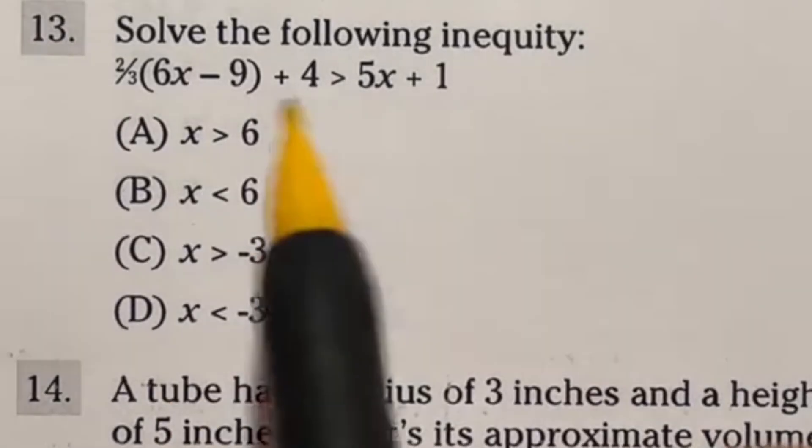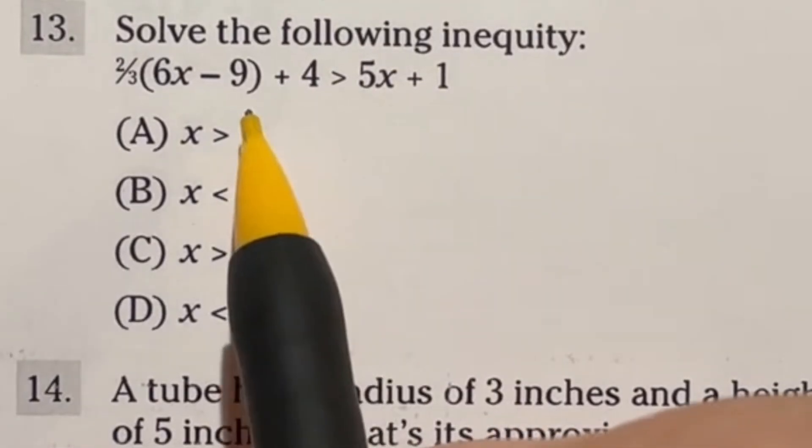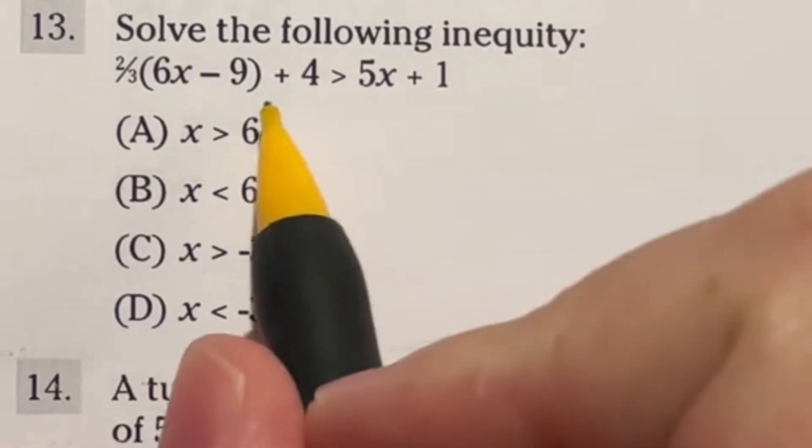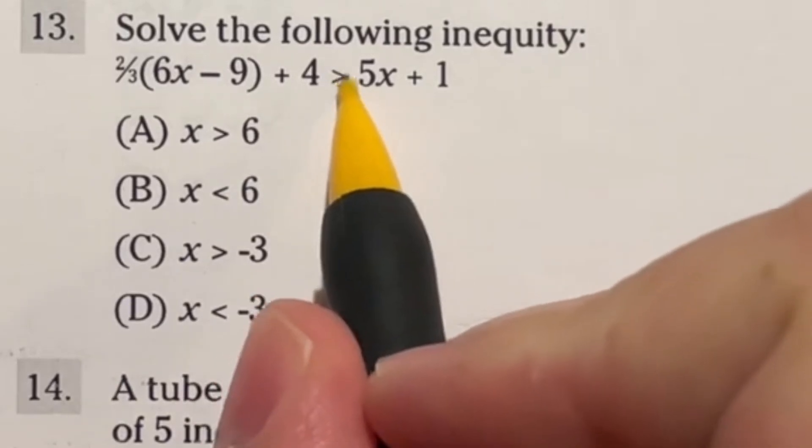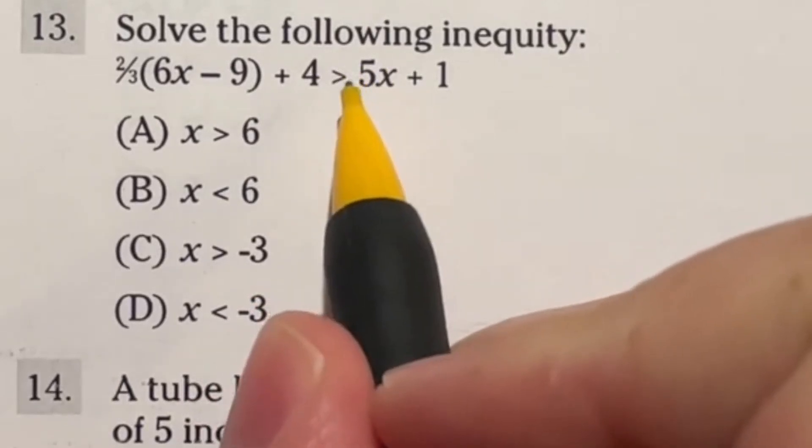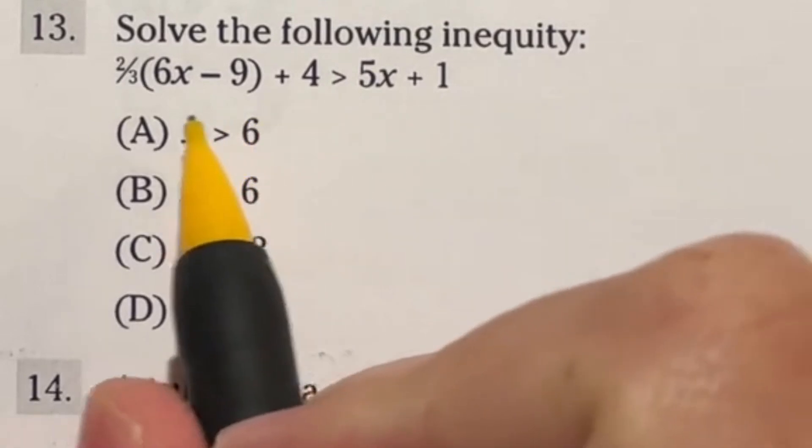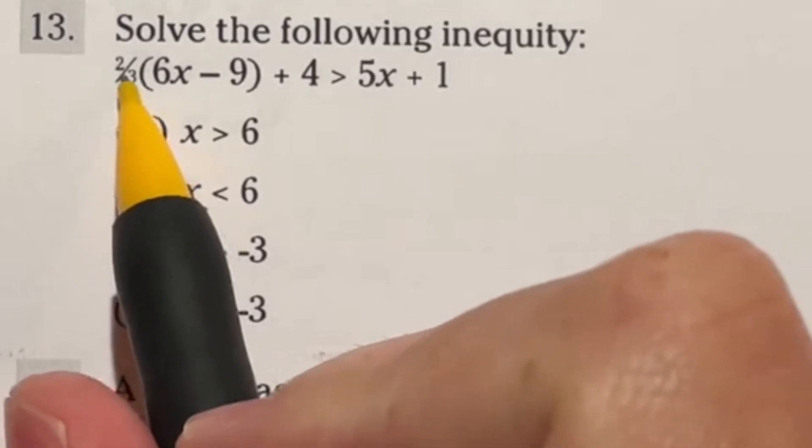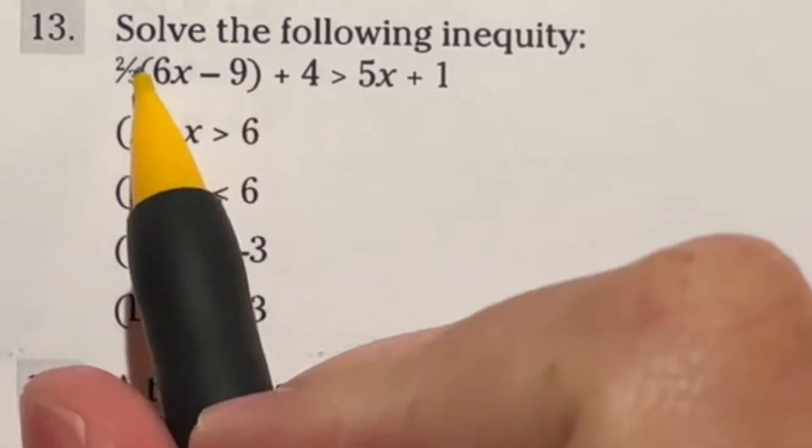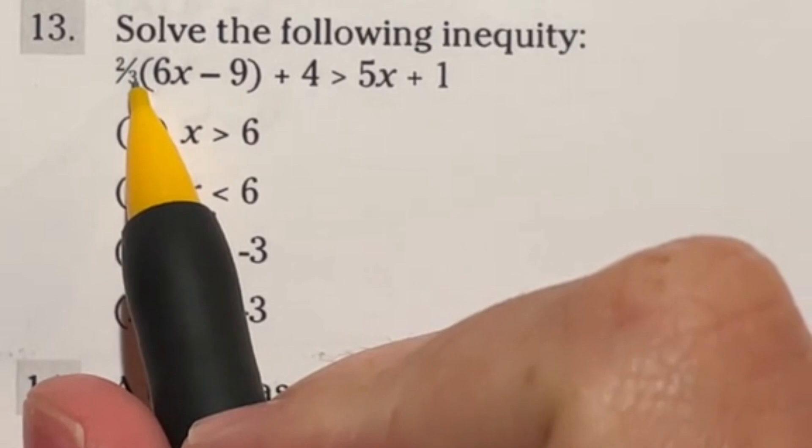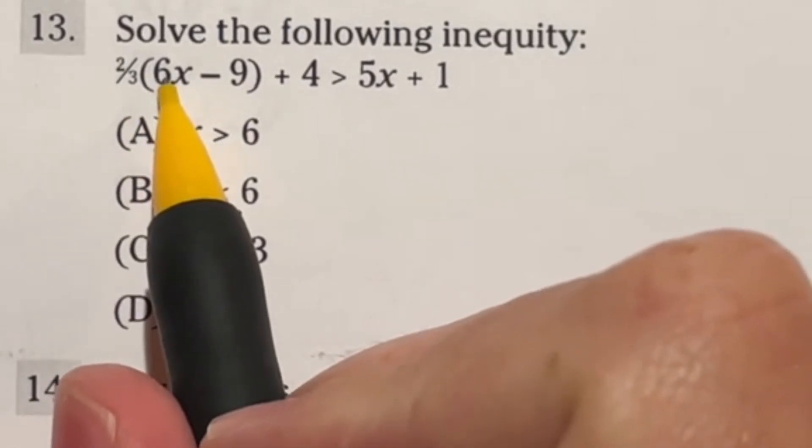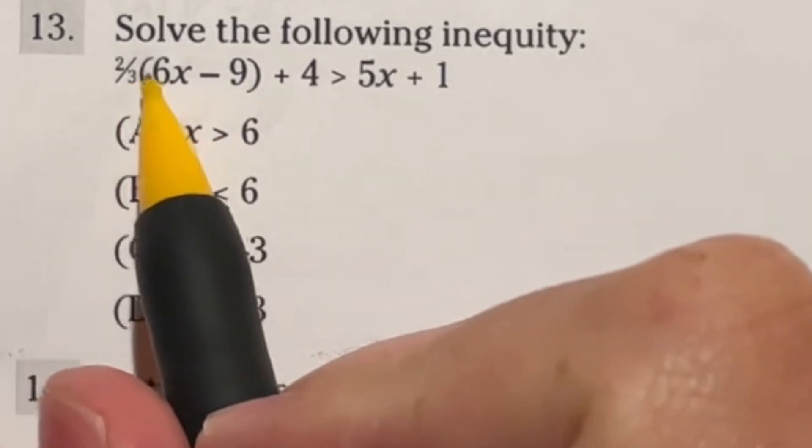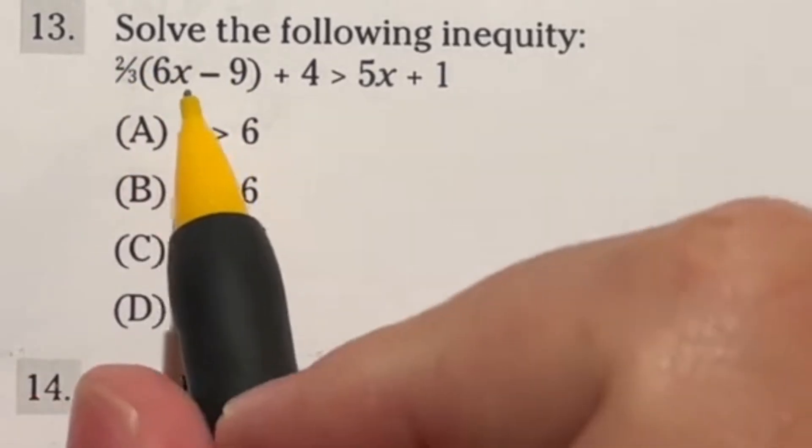So number 13 says to solve the following inequality. Now, for the most part, these should be pretty easy. It's just like solving a regular equation. The only difference is this guy will switch directions if you ever multiply or divide both sides by a negative number. So let's take a look here. Let's start off, I think this is going to be easy to just distribute this because notice how they're each by threes. So if I divide six by three and nine by three, and then multiply by two, that's the same thing as multiplying by two thirds.